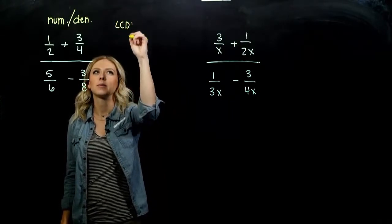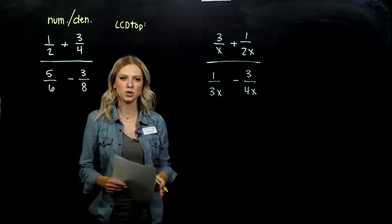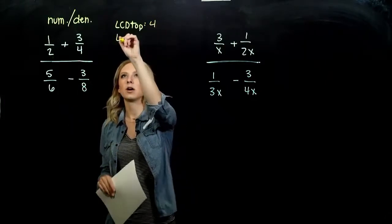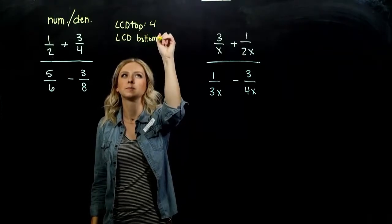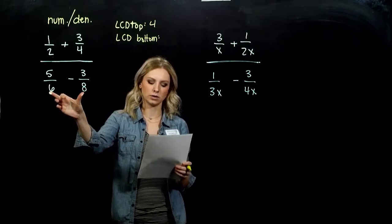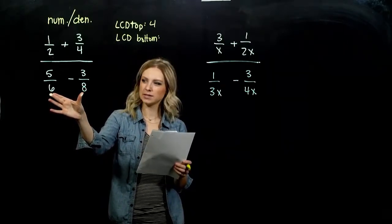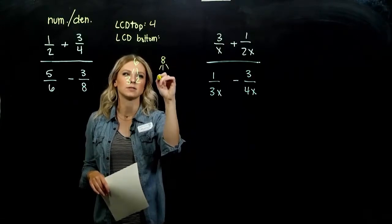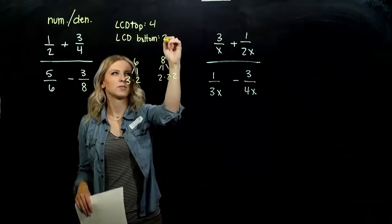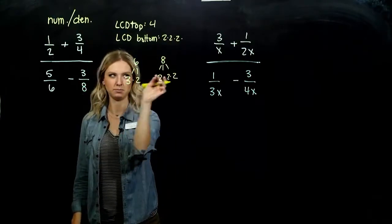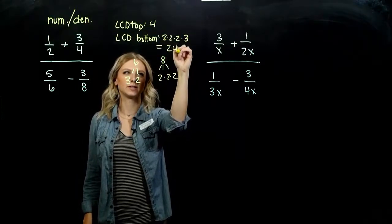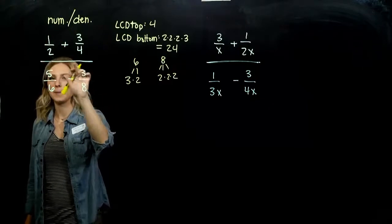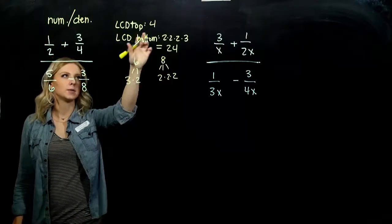Looking at that first example, what is my least common denominator of the numerator? What is the LCD between two and four? Four. And let's talk about the bottom — LCD of the bottom. Between six and eight, what is our least common denominator? It might not be as obvious, so we can break it down: three and two gives us six, and eight is three factors of two. So it needs to be divisible by eight, and we're missing a factor of three from six. Our LCD down there is going to be 24.